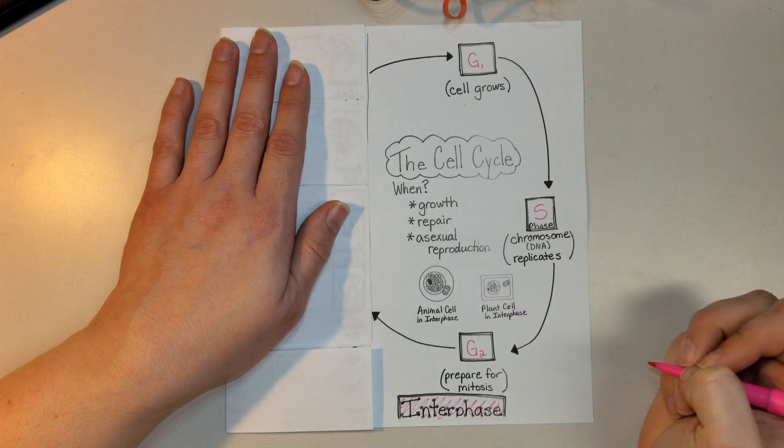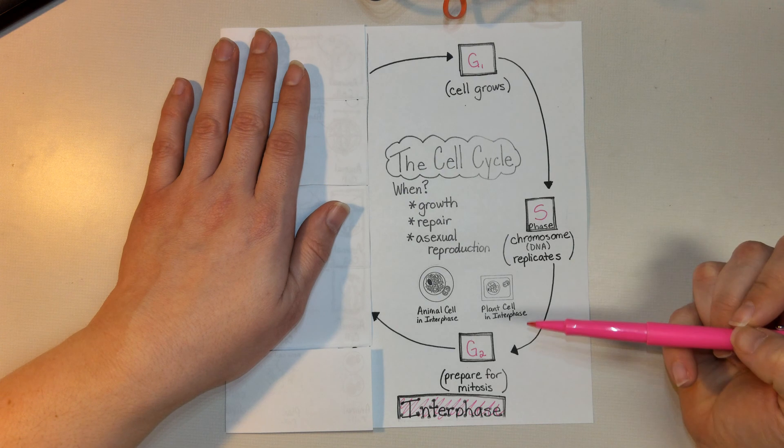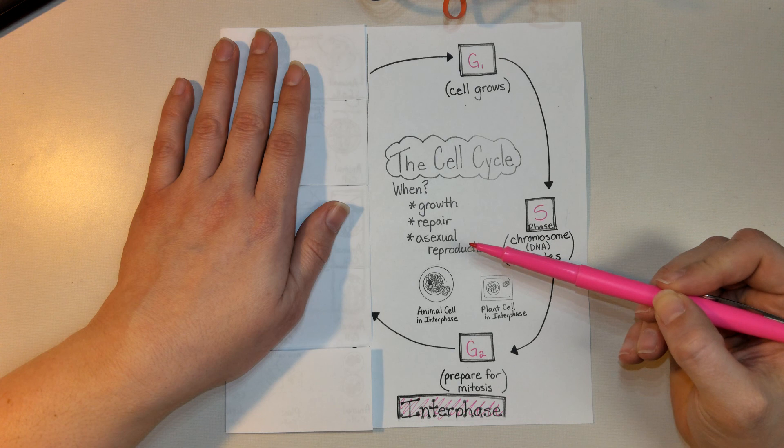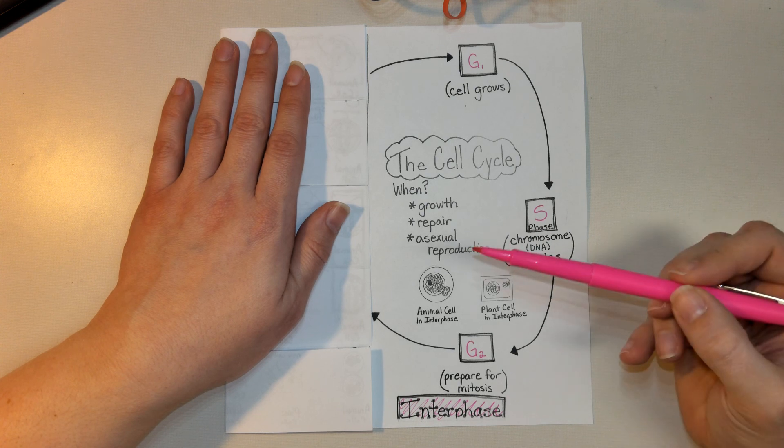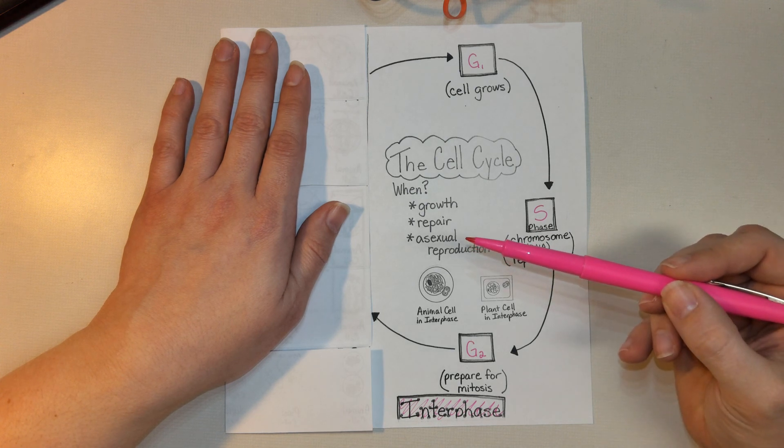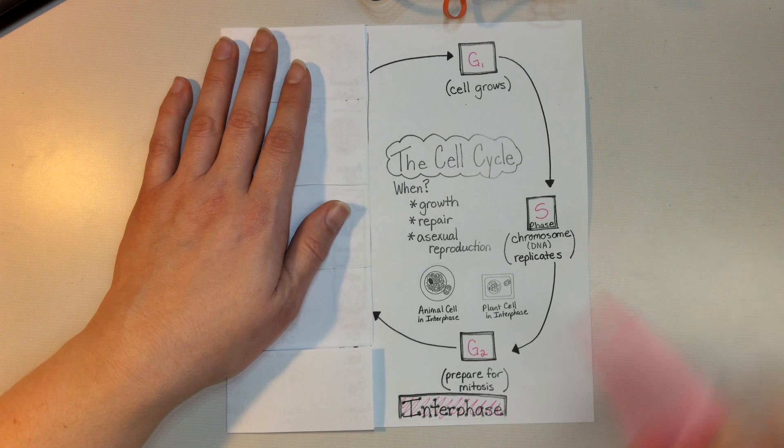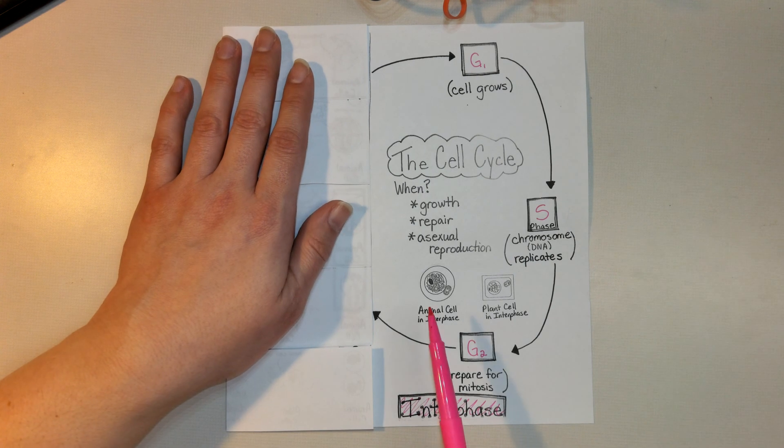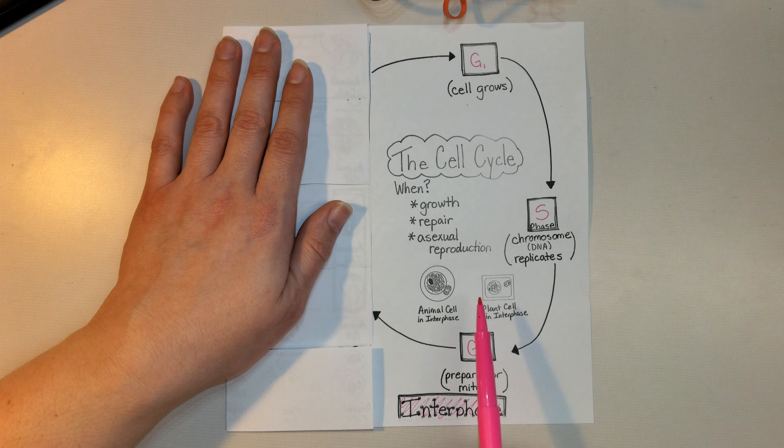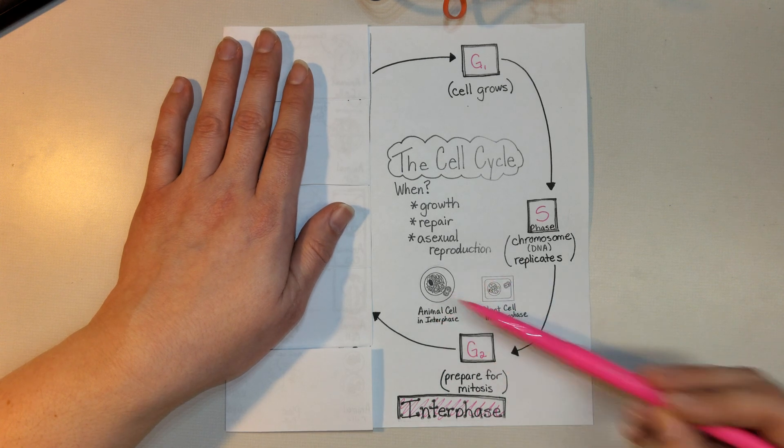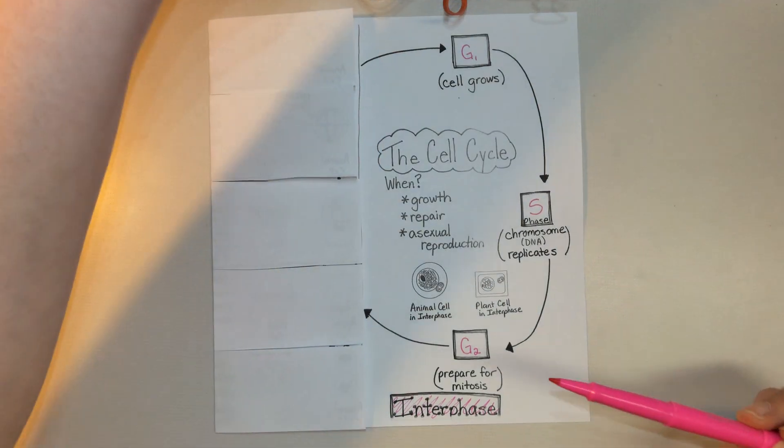The cell cycle is going to happen when organisms need to grow, when organisms need to repair an injury, or when organisms, especially unicellular eukaryotic organisms, need to reproduce. And this is asexual reproduction. We end up with an identical copy of the original organism. Now you are responsible for knowing and being able to identify what phase of the cell cycle a picture of a cell is in. So let's look at this picture. This one is an interphase. So we have animal cell and interphase and plant cell and interphase. Let's label the parts of this just so we have this to reference.